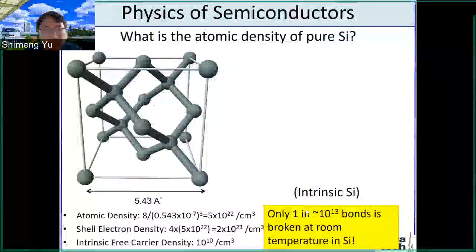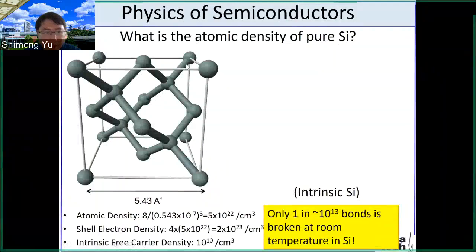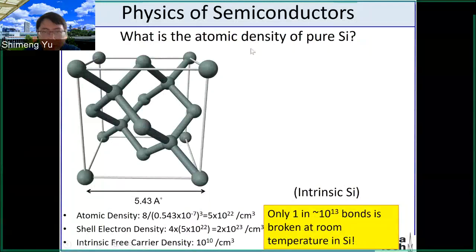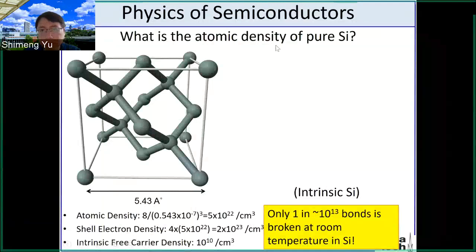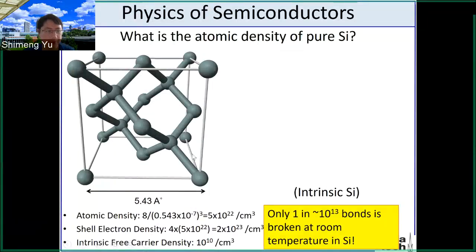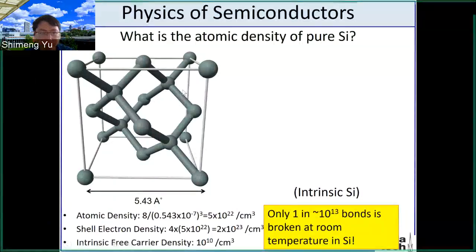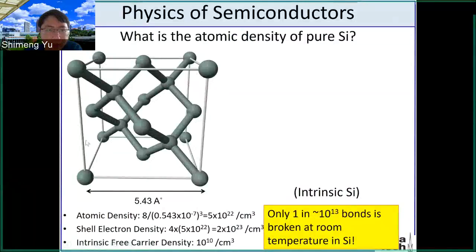The next question is: what is the atomic density of this pure silicon? We have seen this unit cell before, and we can practice this question using the same method as we used for the copper atomic density in lecture two. Similarly, we can count how many silicon atoms are within this unit cell.